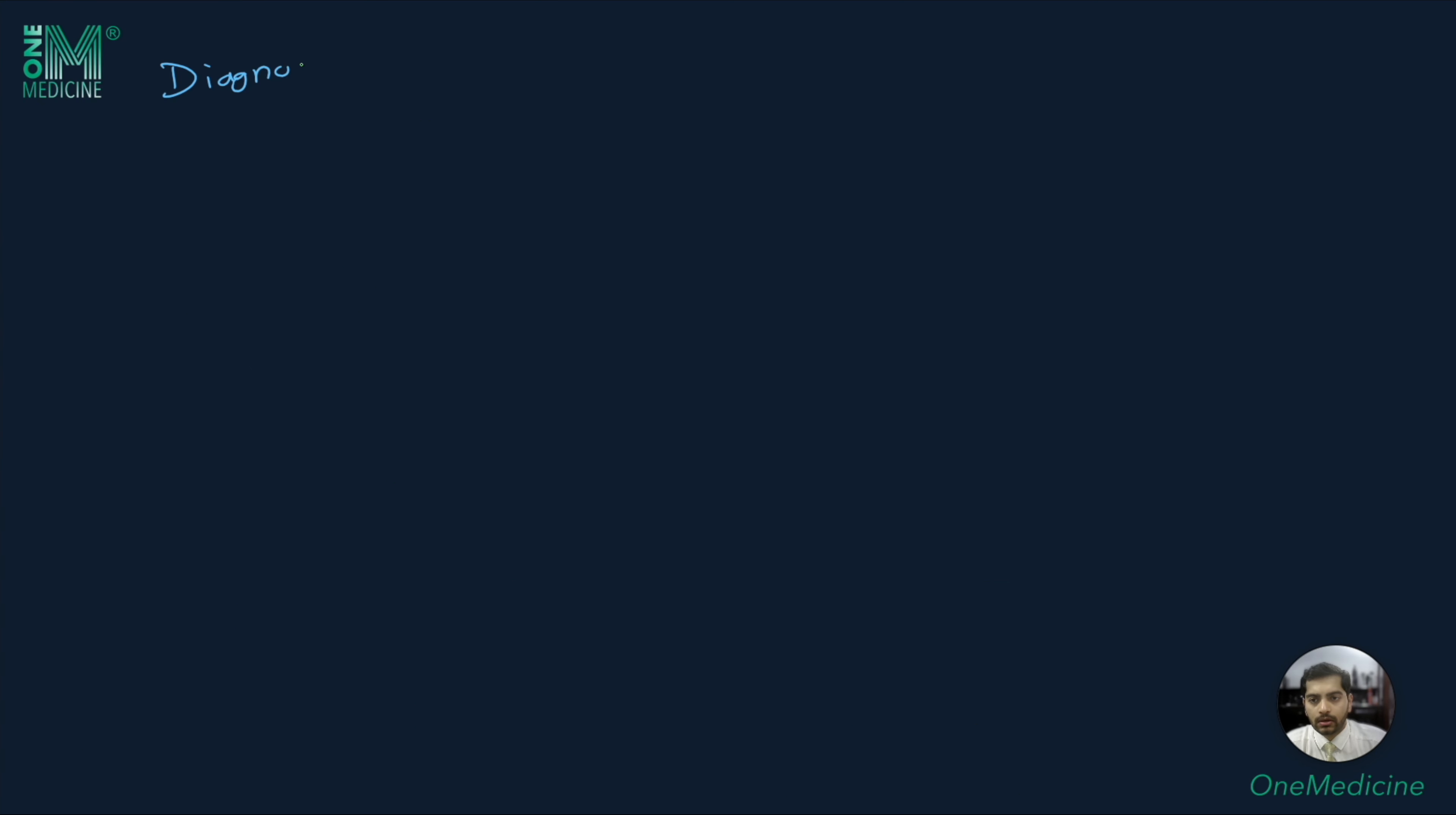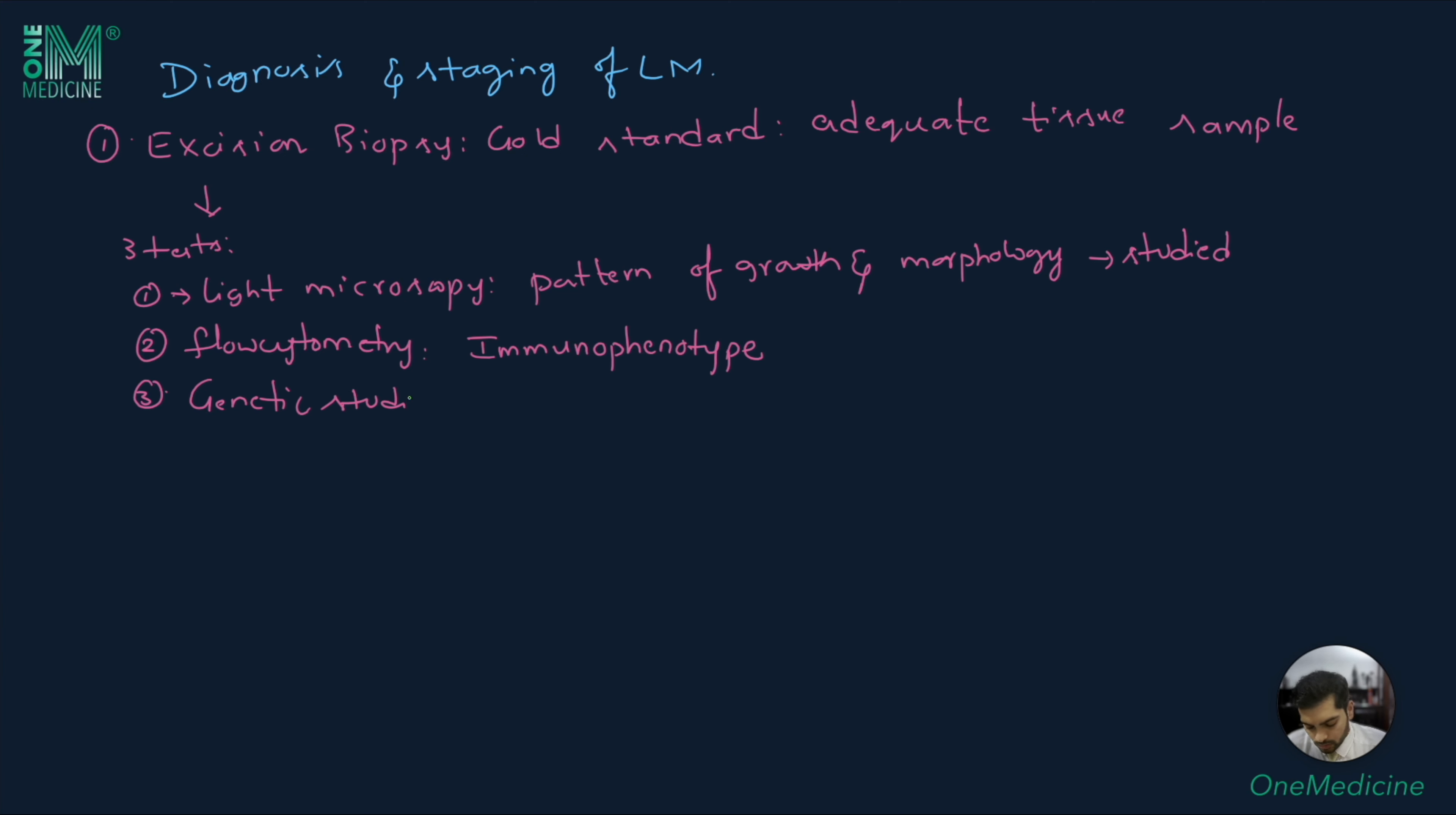Let us now look at the diagnosis and staging of lymphoid malignancy. The first is excision biopsy. This is the gold standard investigation of choice. However, there should be adequate tissue sample. The tissue sample is subjected to three tests: light microscopy where the pattern of growth and morphologic features are studied, flow cytometry where the immunophenotype is assessed, and genetic studies when it is subjected to DNA testing and cytogenetics.